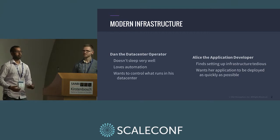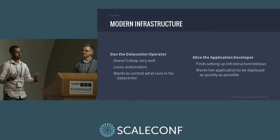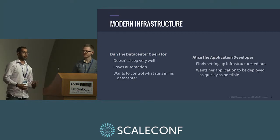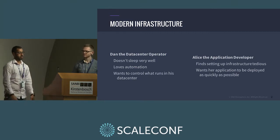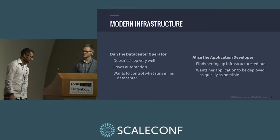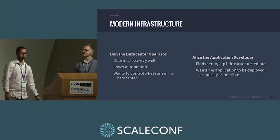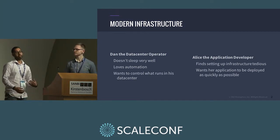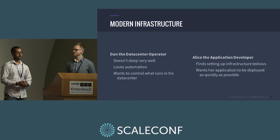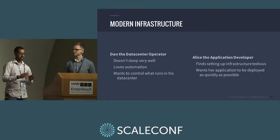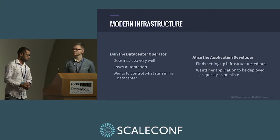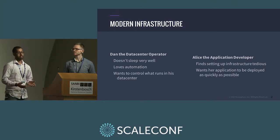Alice deploys an application that breaks, and then Dan has to wake up and fix stuff. Otherwise the website goes down, your service goes down, your customers get angry and don't pay you money anymore. Dan loves automation because it makes his job much easier — he can reproduce issues. He has an audit trail of what happened when.